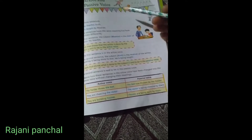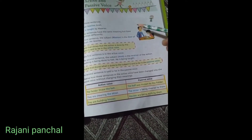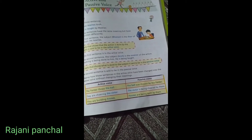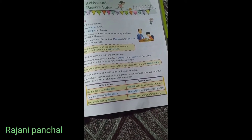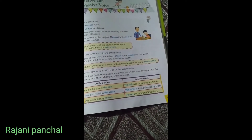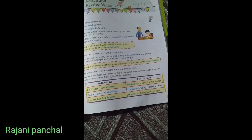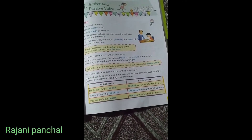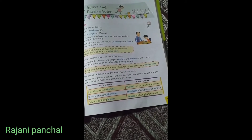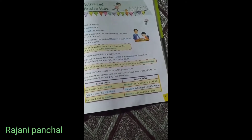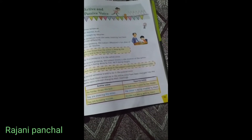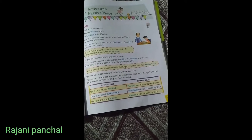First of all, I will tell you what is active and passive voice. The things that you need to know include: present indefinite, simple present, simple past, simple future, present continuous, and present perfect. These are all the tenses you need. Then you can change active voice to passive voice. This is not hard — you can do this very easily.